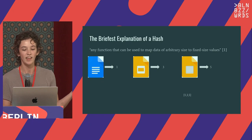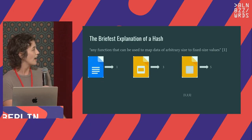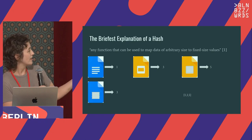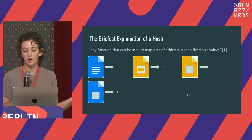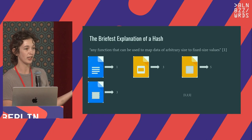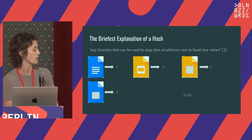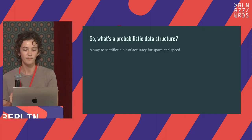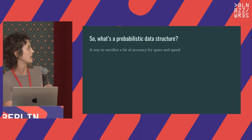Right now, if I asked what do I have in this set of documents, I have one, three, and five. If I have a new document that also hashes to the value three, I think I already have that document — it's not a new document as far as this probabilistic set is concerned. So a probabilistic data structure is a way to sacrifice a bit of accuracy for space and speed.